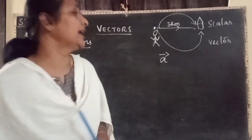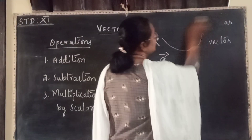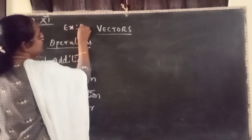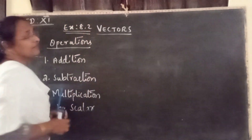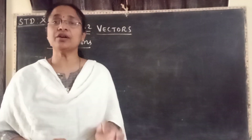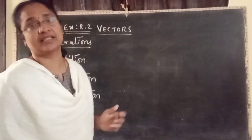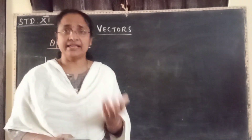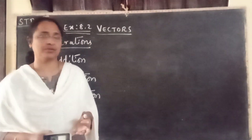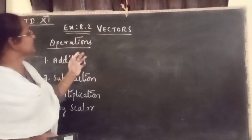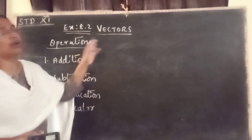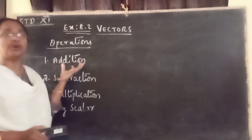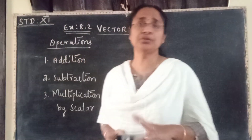So these are the very initial concepts we have already discussed. Now in exercise 8.2, we are going to discuss the operations on vectors. We know the basic operations: addition, subtraction, multiplication, and so on. So now let us discuss the basic operations involved in vectors. For example, addition of two vectors.